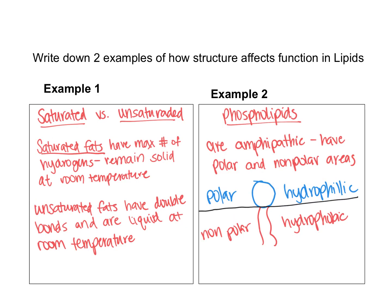In summary, we looked at how saturated versus unsaturated fats are an example of structure affecting function. There's a great short video in the description box explaining saturated versus unsaturated fats and how they affect human health. We also used phospholipids as an example, discussing how they are amphipathic — having hydrophilic, water-loving parts and hydrophobic non-polar tails. There's another short video on phospholipid structure linked below. Thanks so much for watching, y'all. See you next time. Bye-bye.